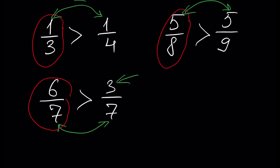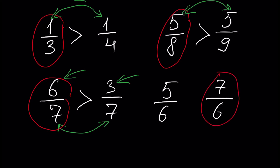The smaller number 3 is divided by 7, and the bigger number 6 is divided by 7 — that's why the fraction with the bigger numerator is greater. Another example: 5 over 6 and 7 over 6. In both cases the denominators are the same, 6 and 6, but 7 over 6 is bigger because the greater number is divided by the same number.